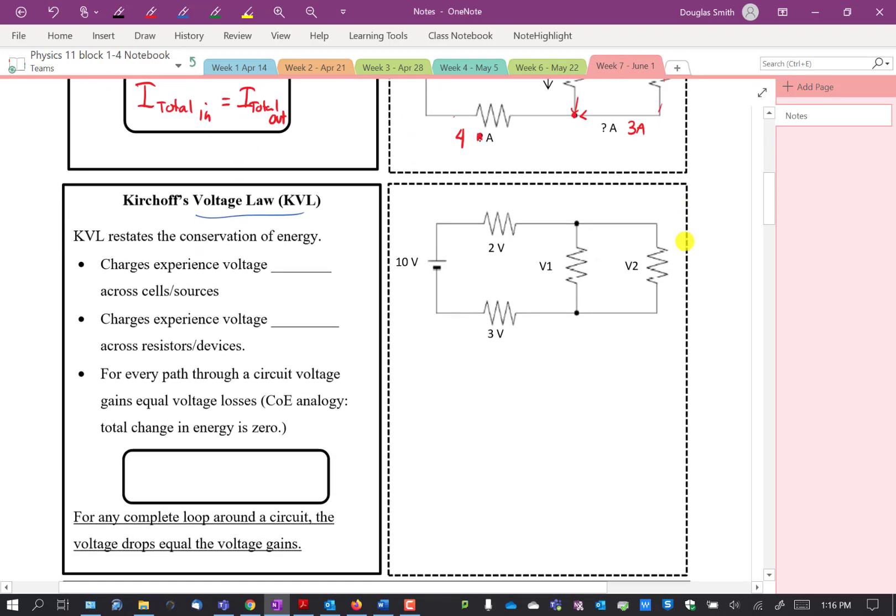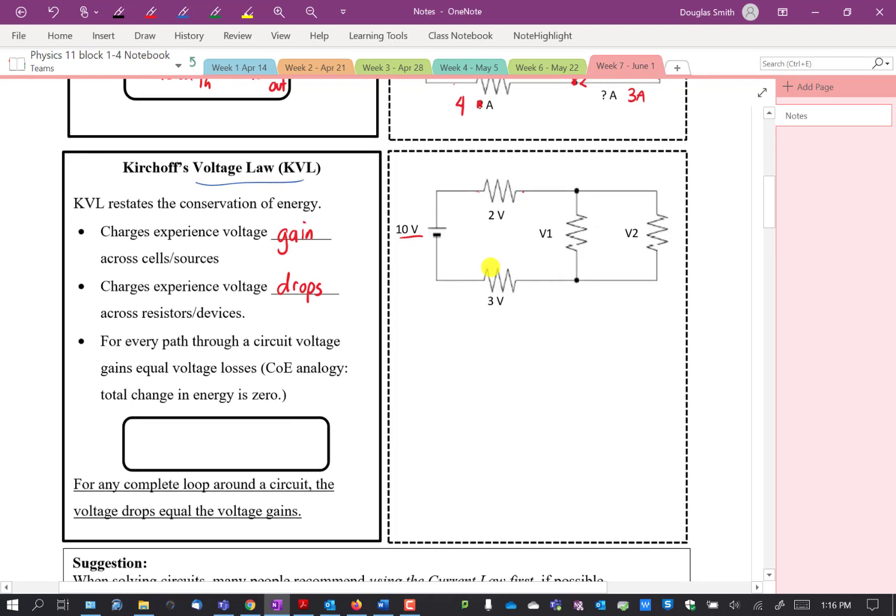The next law is called Kirchhoff's voltage law. It's actually a restatement of conservation of energy, but there's some things to think about when we look at this law in terms of circuits. First of all, charges experience voltage gain across cells or sources. So in this example here, this is a voltage gain of 10 volts. Charges experience voltage drops across resistors and devices. So as the current goes from this end to this end of the resistor, the voltage drops. Therefore, the voltage law states that for every path through a circuit, the voltage gains equals the voltage losses. That's restating conservation of energy - the total change in energy is zero. The total voltage, the gains and the losses, when you add those up, it's zero.